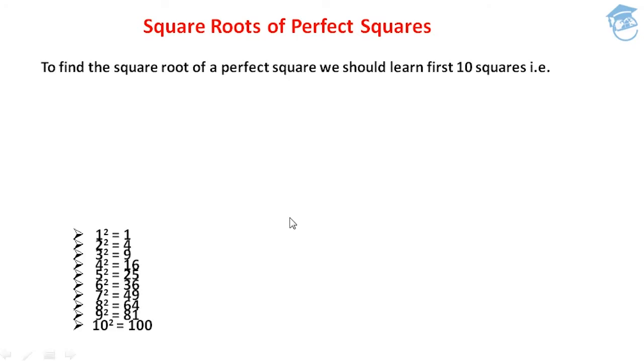To find the square root of perfect squares, at first we have to learn two things and keep them in mind. The first thing is the first 10 squares: 1²=1, 2²=4, 3²=9, 4²=16, 5²=25, 6²=36, 7²=49, 8²=64, 9²=81, and 10²=100.